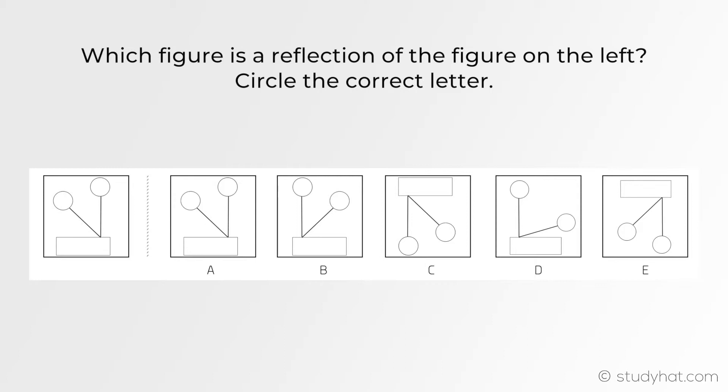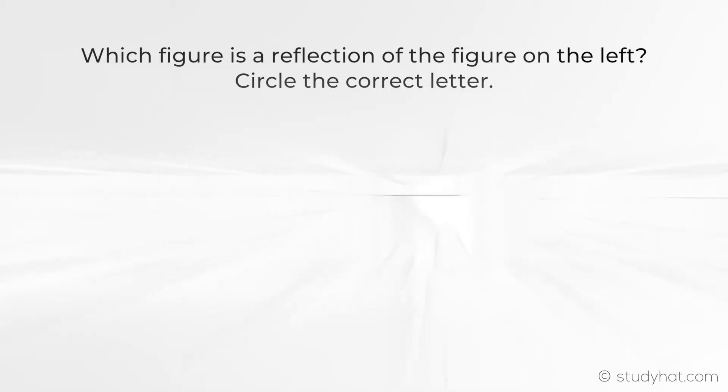Straight away we can see that this is a reflection over a vertical line so if we zoom in we now know that this edge will be on the opposite side. It's currently on the right and because it's been reflected it should end up on the left.